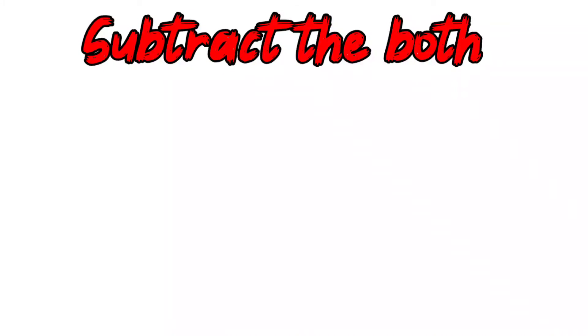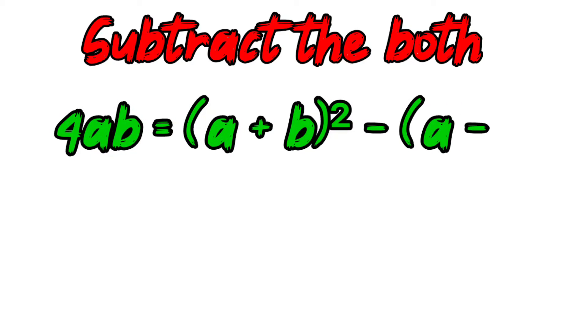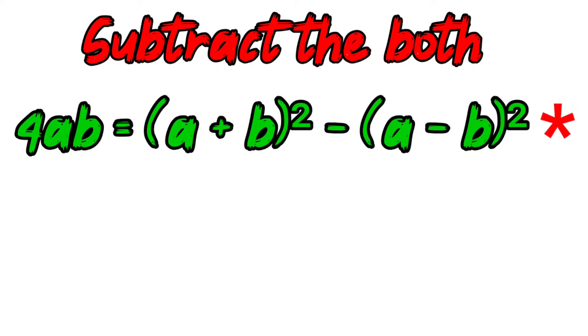Subtract the both. 4ab is equal to a plus b whole square minus a minus b whole square.